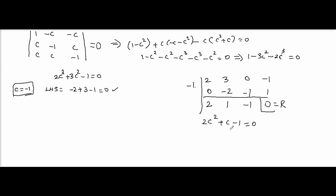So the quotient is 2c square plus c minus 1. Now if we factorize, sum equal to 1, product equal to minus 2. So the two numbers are 2 and minus 1.